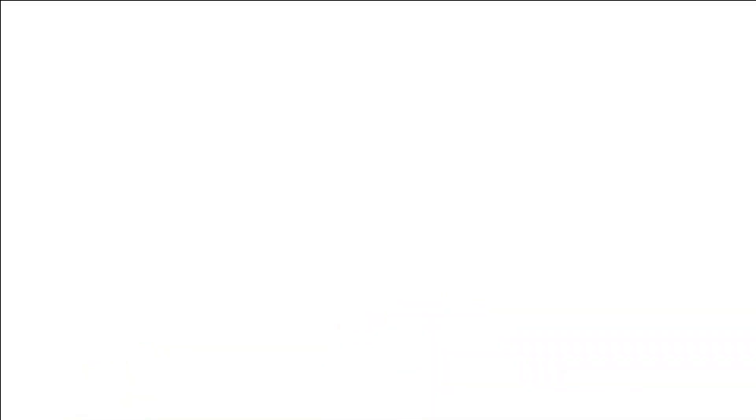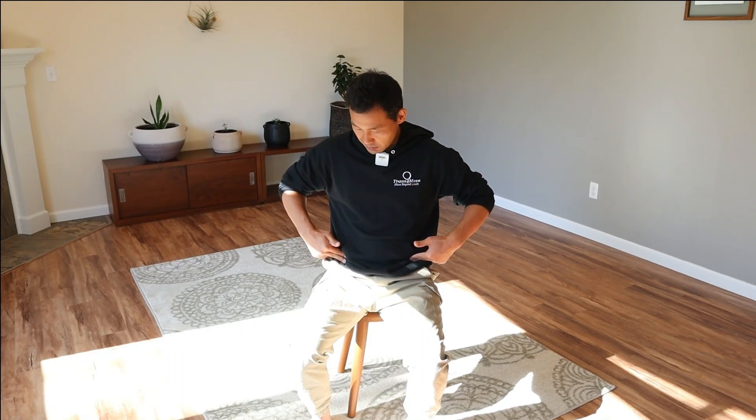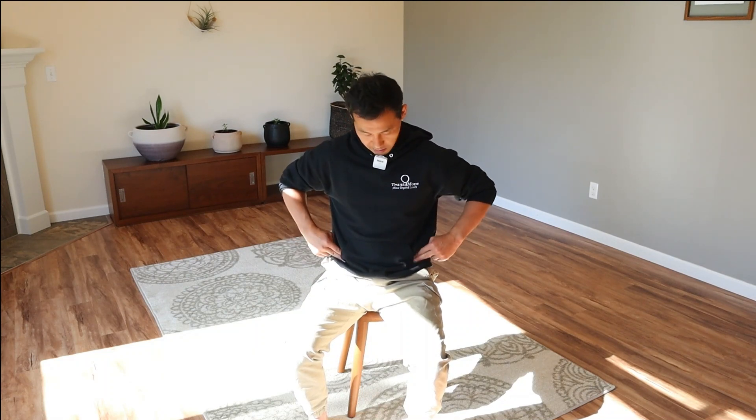The way you can identify whether you have this bias is to observe the position of your pelvis. Place your hands and fingers on the front bony parts of your pelvis. Imagine there are eyes on the front of the pelvis. Sit in your normal comfortable position and feel which direction those points are facing.